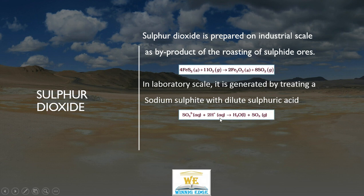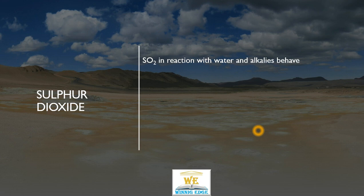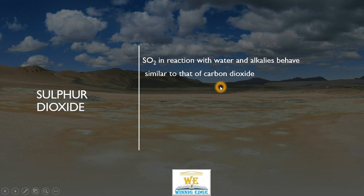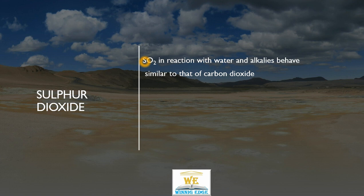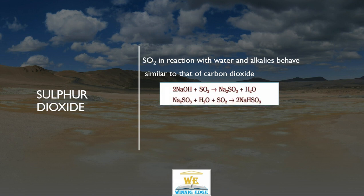Sulphur reacts with oxygen to give Sulphur dioxide. The interaction of Sulphur dioxide with water is similar to that of carbon dioxide — like carbon dioxide dissolves in water to give carbonic acid, Sulphur dioxide dissolves in water to give sulphurous acid, which is in equilibrium with water. As it is acidic in nature, it reacts with alkali to give sodium sulphite. Sodium sulphite further reacts with Sulphur dioxide to give sodium hydrogen sulphite.